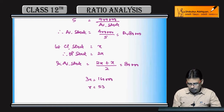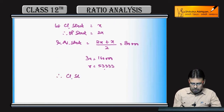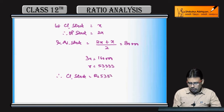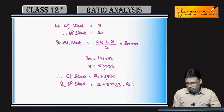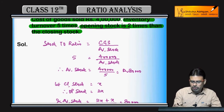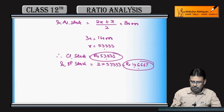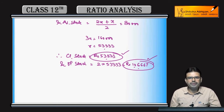x equals 53,333. Therefore closing stock is 53,333 and opening stock is 2 into 53,333 equals 1,06,666. Done.